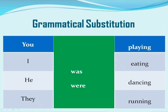Now let's discuss grammatical substitution. As you can see on your screen, on the extreme left-hand side there are words like you, I, he, and they — persons in forms like first person, second person, and third person. In the middle part of the table it says 'was' and 'were,' while on the extreme right-hand side there are words like playing, eating, dancing, and running. This table is particularly used to teach grammar.